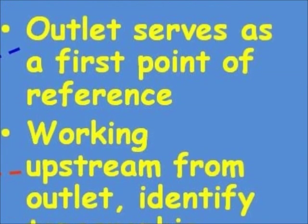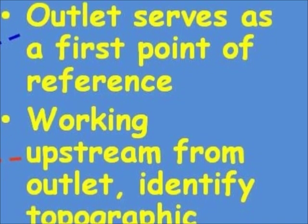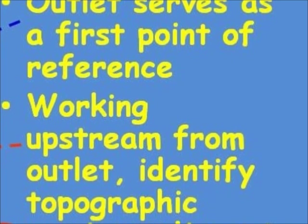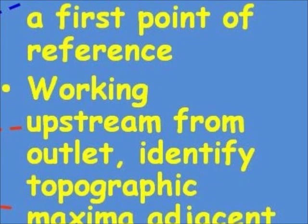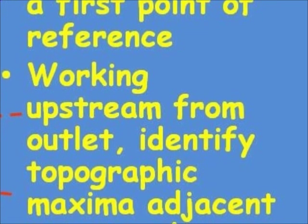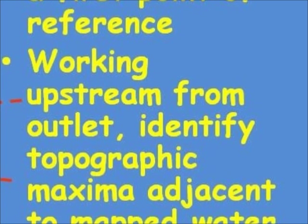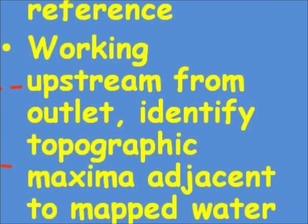The procedure for watershed delineation looks like this. First of all, we need to identify the outlet as a first point of reference. From the outlet, we work our way upstream and identify topographic maxima high points adjacent to the mapped watercourse.